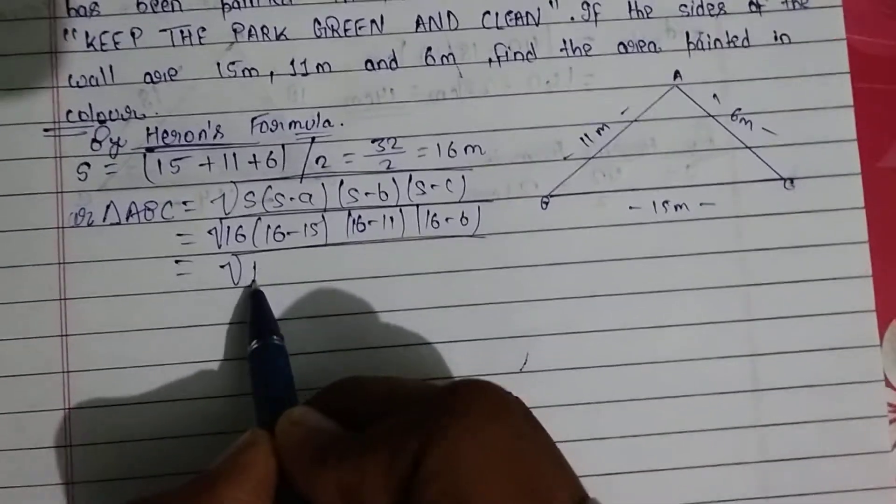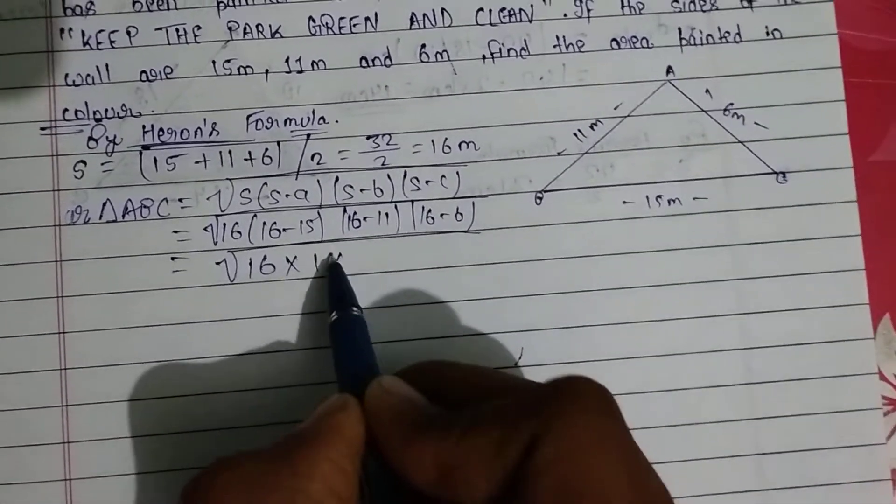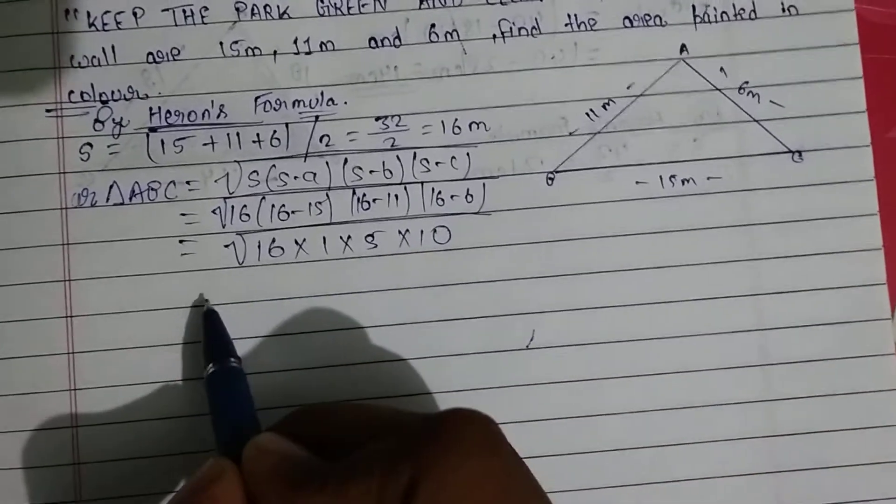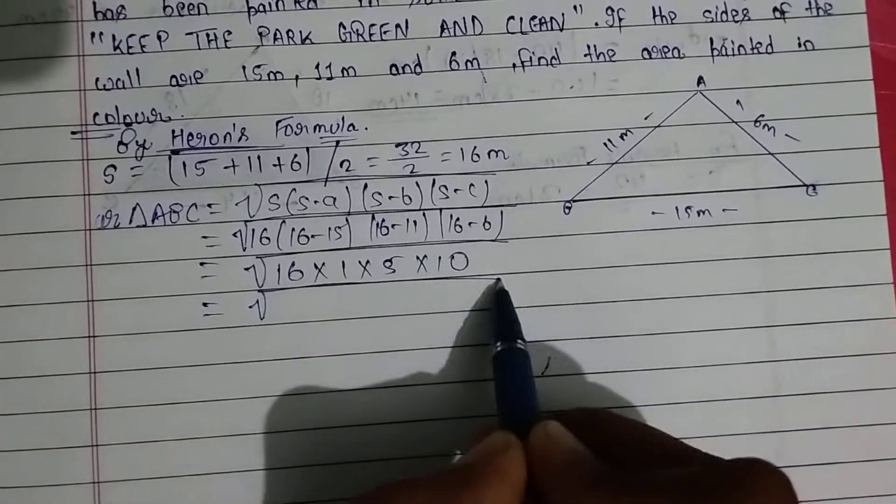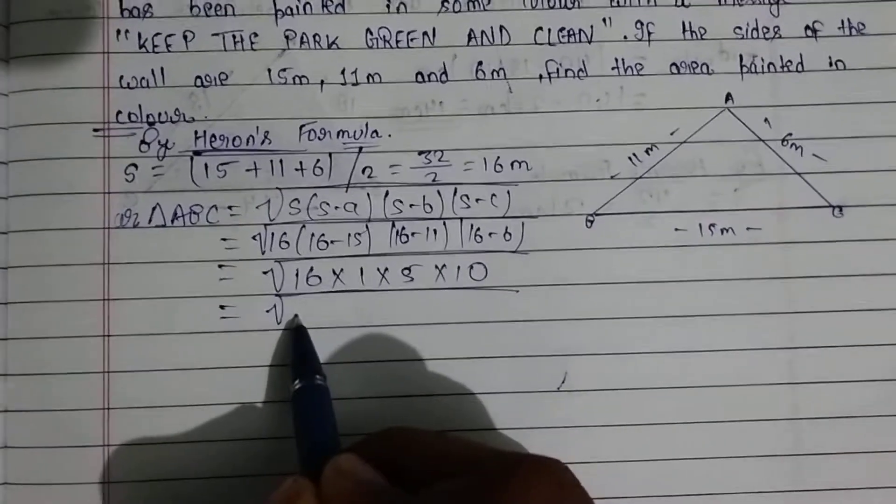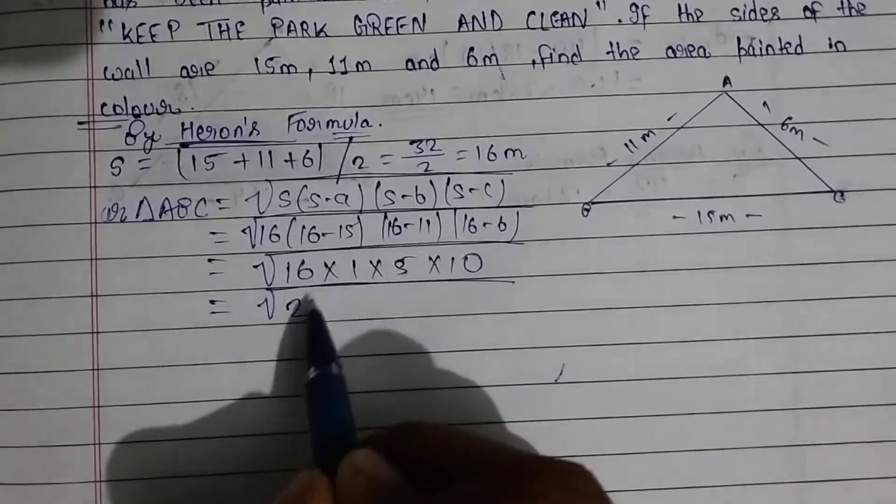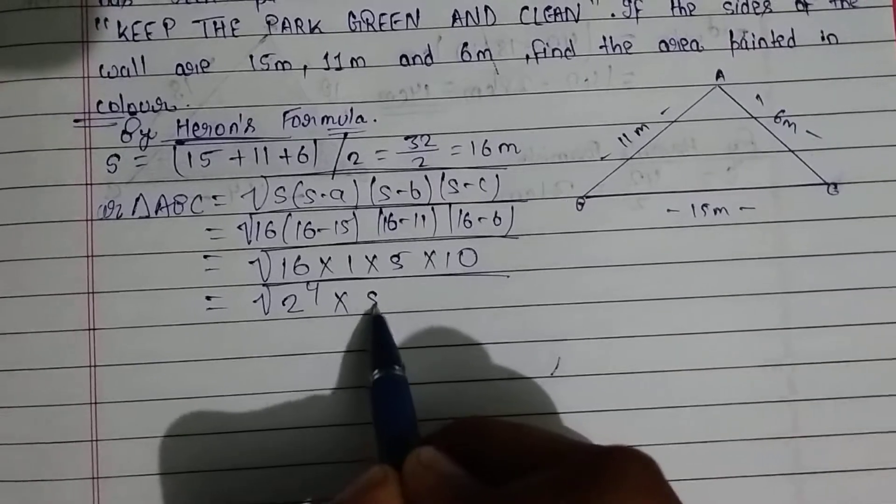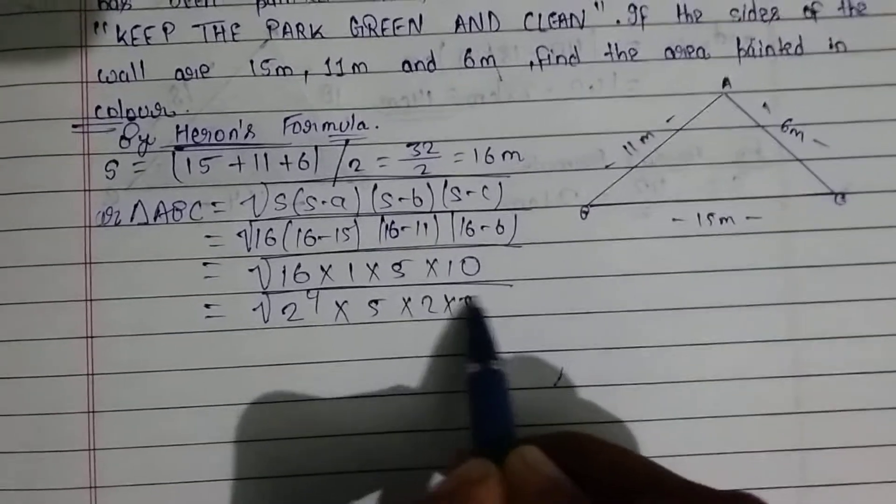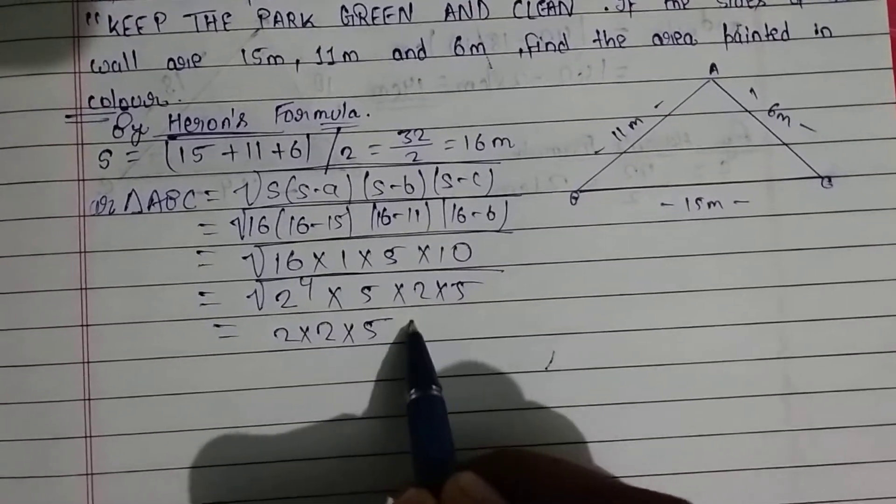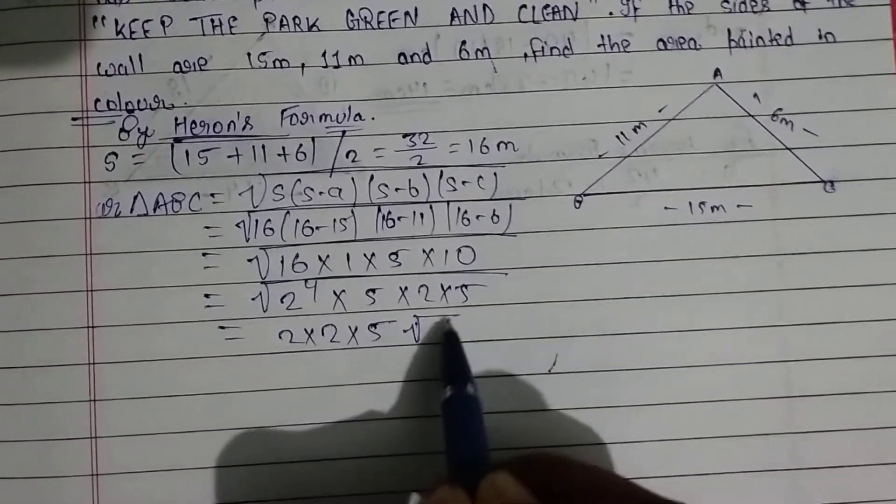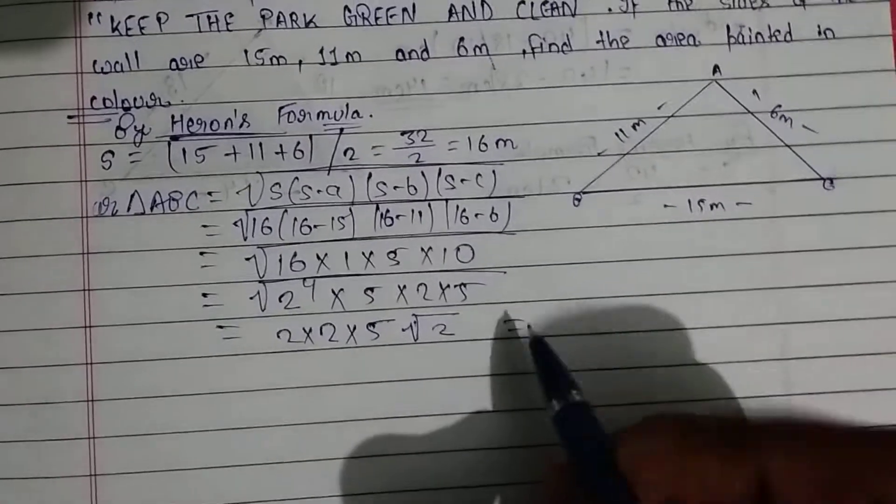Taking out common factors and factorizing: square root of 16 × 1 × 5 × 10. This becomes 2 to the power 4 times 5 times 2 times 5. Taking common factors: 2 × 2 × 5, which simplifies to 20 times square root of 2.